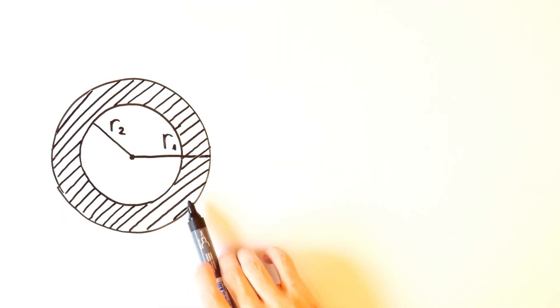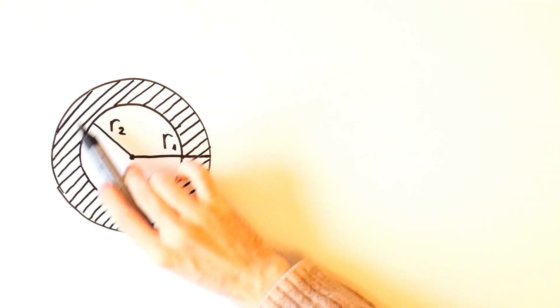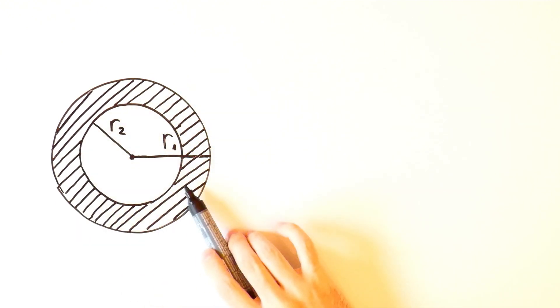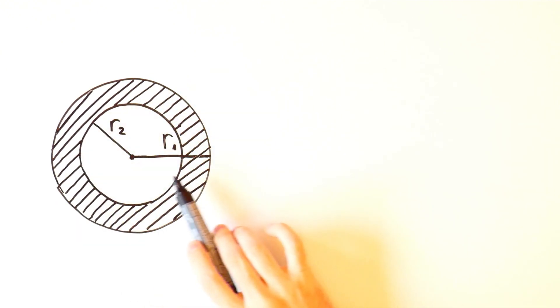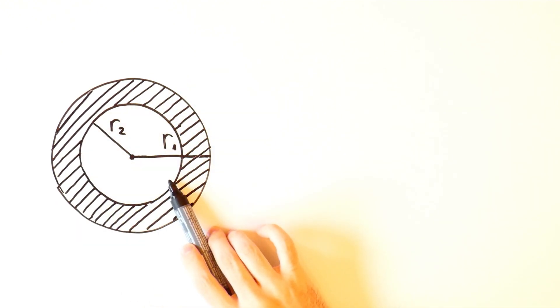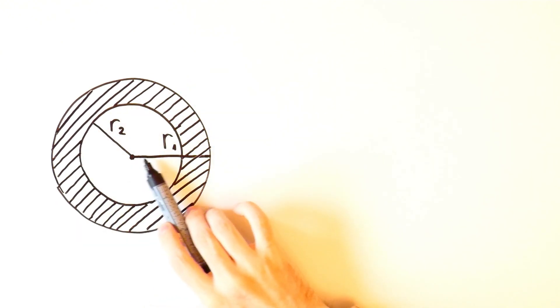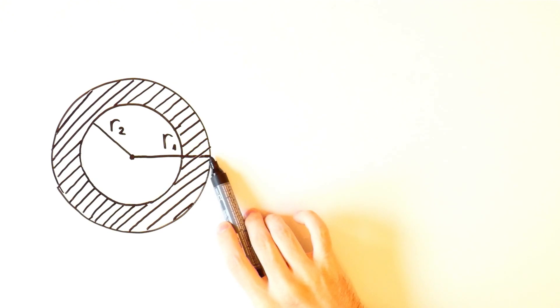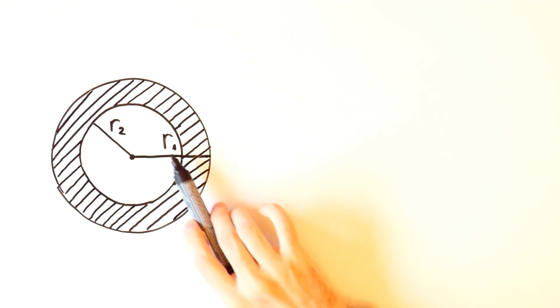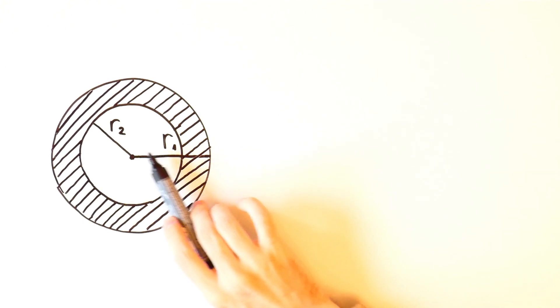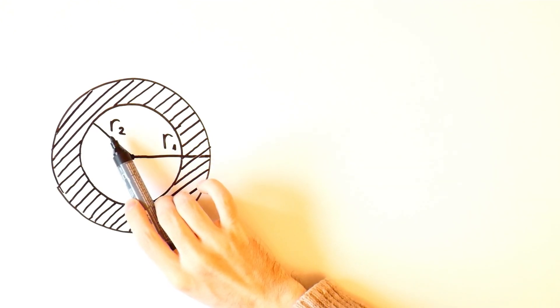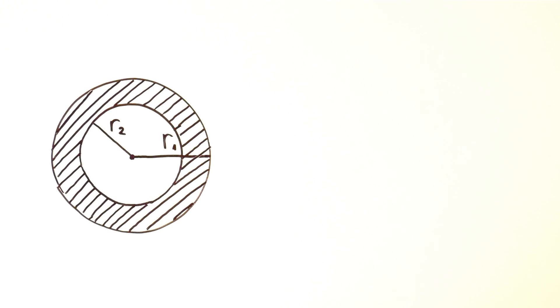An annulus, or circular ring, is a region between two concentric circles. The radius of the outer circle we'll call R1, and the radius of the inner circle we'll call R2.